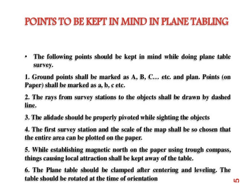When carrying out plane table surveying, the following points should be considered when preparing a plan or map. Ground points shall be marked as capital A, B, C whereas corresponding points on the paper should be shown as small a, b, c. Rays from the survey station to objects shall be drawn as dashed lines. The alidade should be properly pivoted while sighting. The first survey station and scale of the map shall be chosen so that the entire area can be plotted. When establishing magnetic north using a trough compass, sources of local attraction shall be kept away. The plane table should be clamped after centering and leveling, and rotated only during orientation.